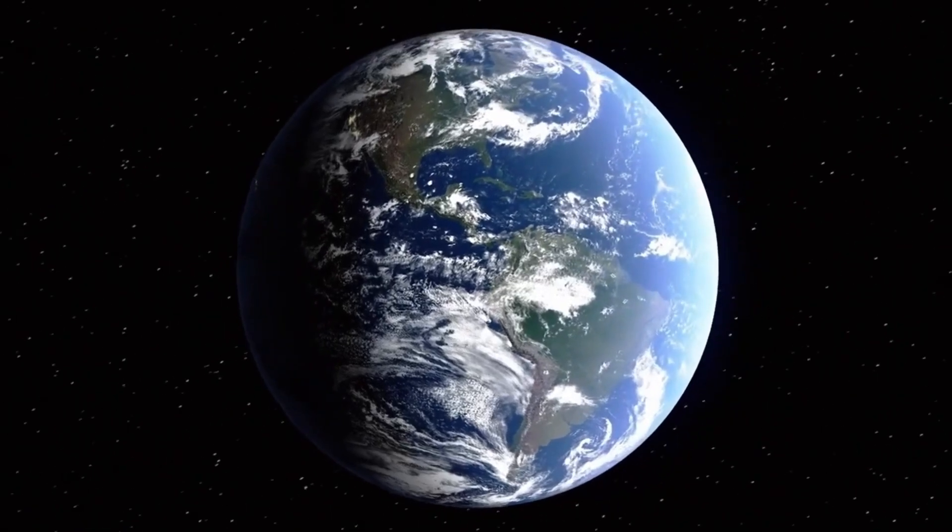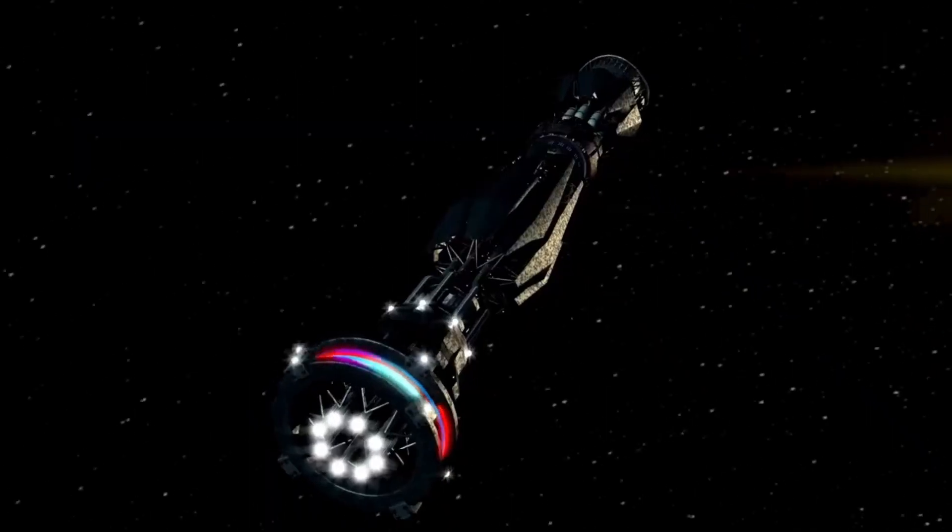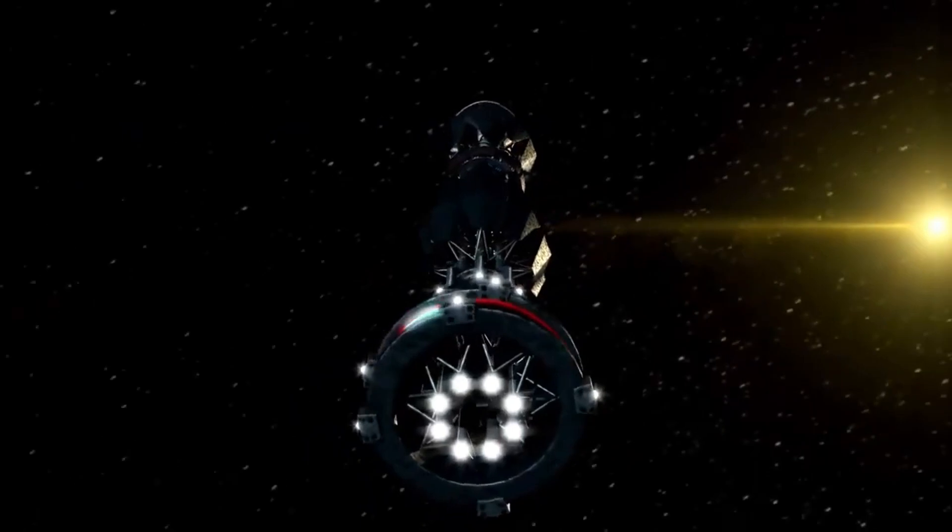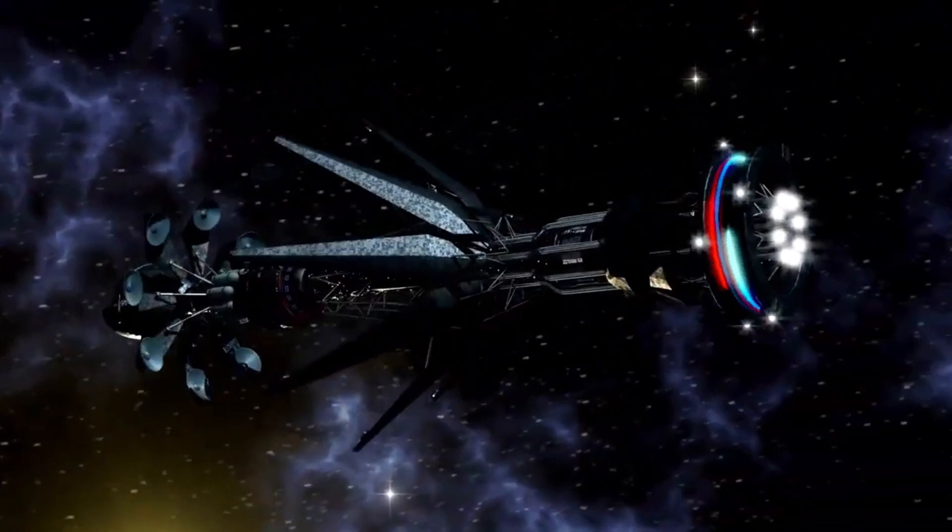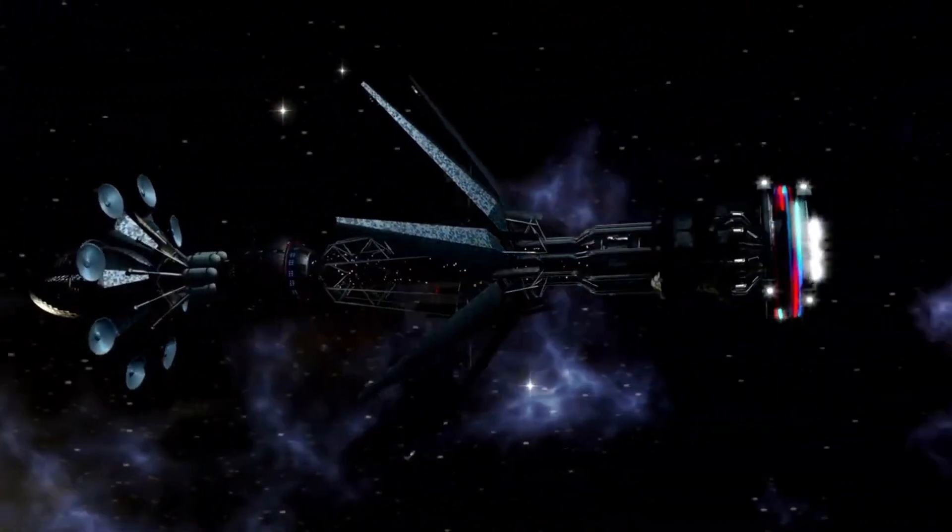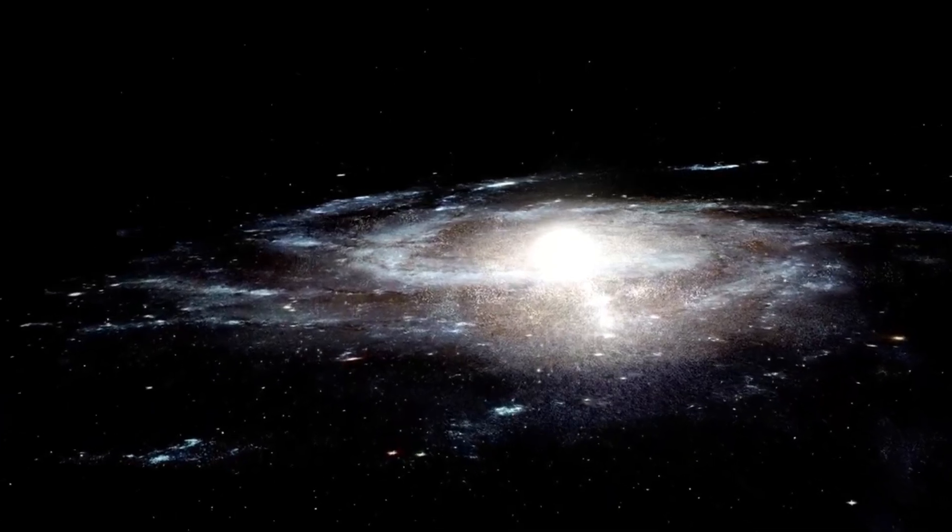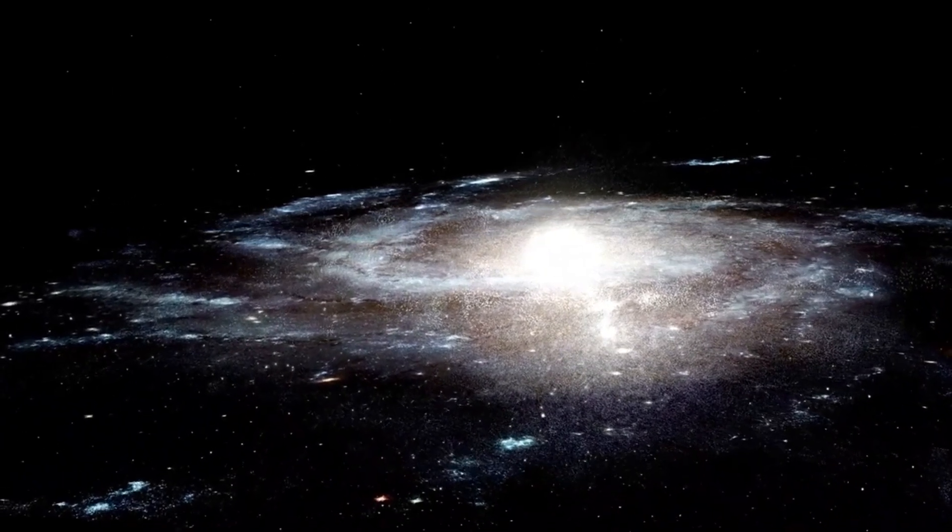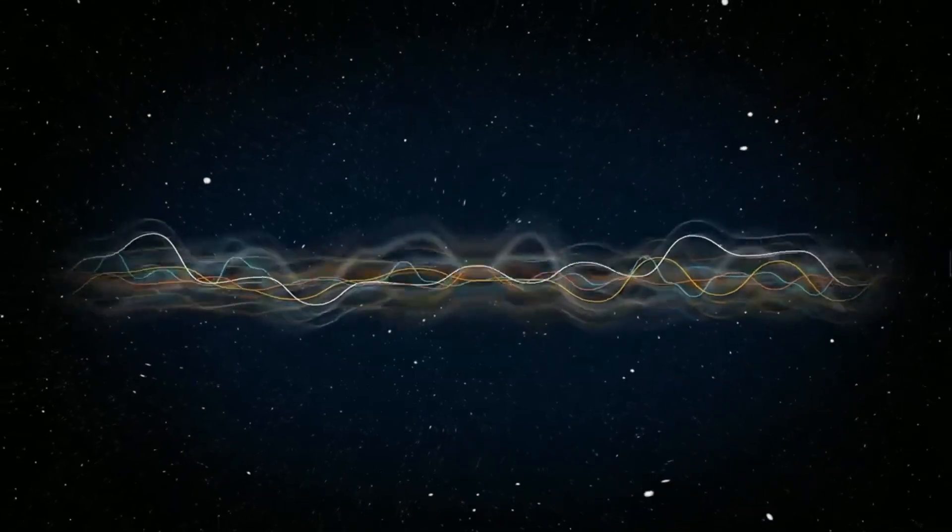Beyond the Milky Way, we find our local galaxy group which includes around 50 galaxies. This in turn is part of the Virgo cluster which contains over 1,500 galaxies. Even this massive cluster is merely one component of the Laniakea supercluster, a vast collection of around 100,000 galaxies. Yet, the scale does not stop there. Our supercluster is just one among millions of other superclusters in the observable universe.